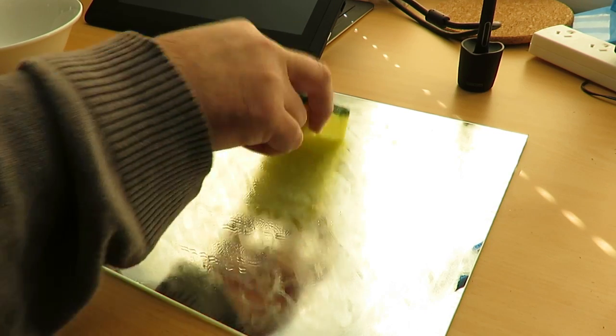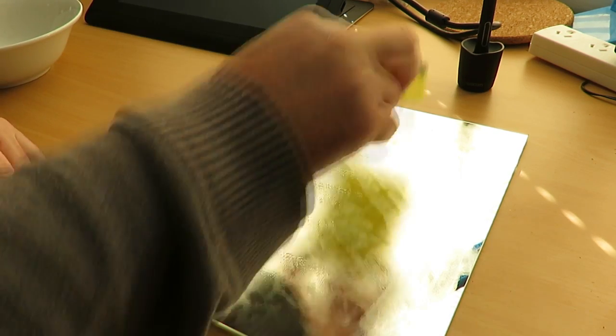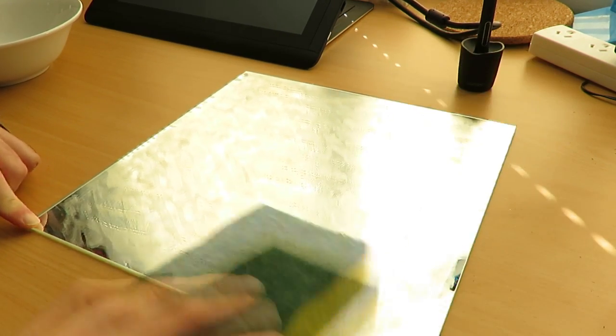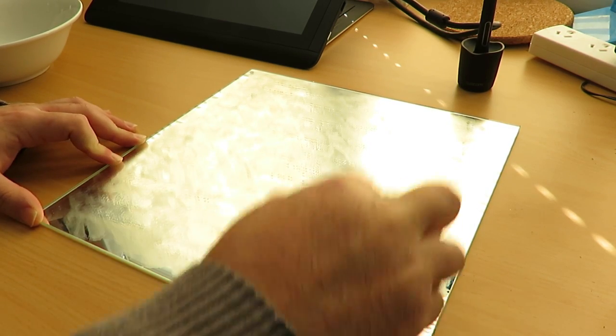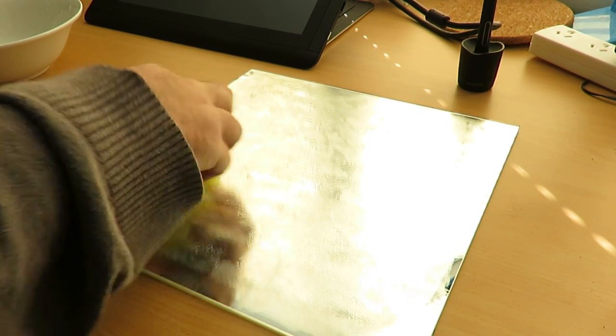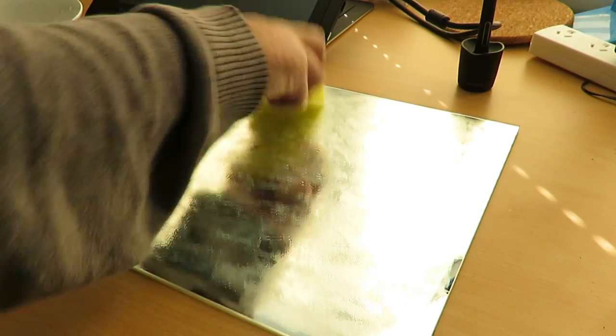Glue stick has this lovely property of being cleanable with water. This means that when kids get it everywhere, you can clean it up easily. What we're actually doing with the sponge and water is diluting the glue that's on the surface and spreading it more evenly.